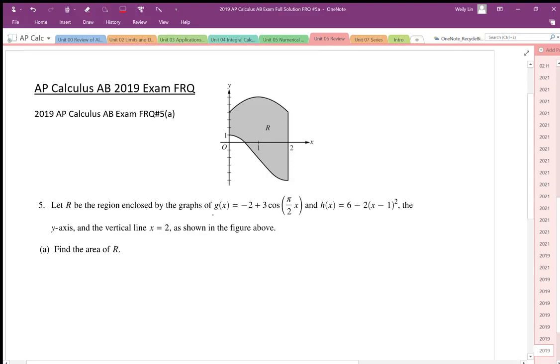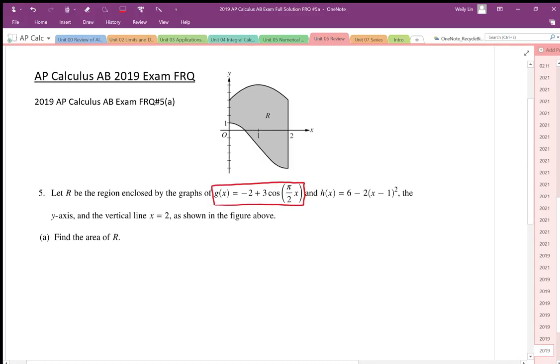So g of x is this cosine function here. This g of x is going to represent the lower function. And the h of x is the parabola, or the quadratic function. So this function here is going to be the upper function.